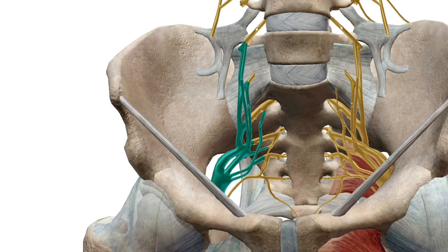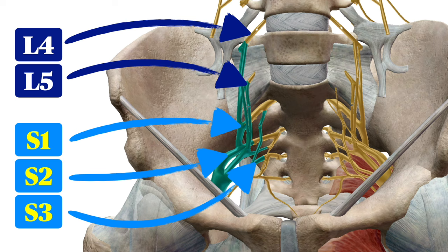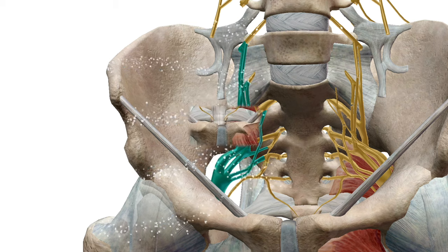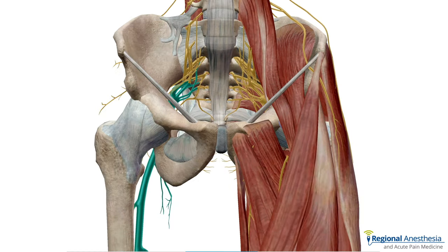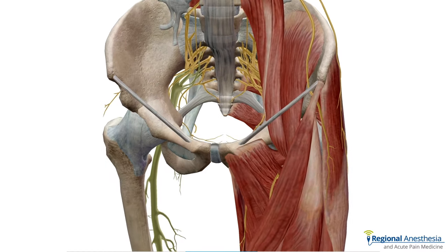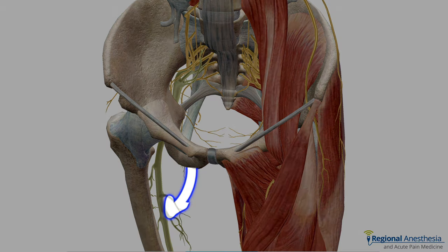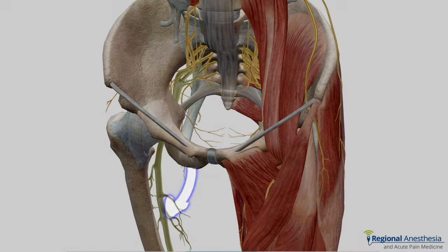The sciatic nerve is derived from the ventral rami of L4, L5, as well as S1, 2, and 3. These combine to form a single large nerve that then leaves the pelvis through the greater sciatic foramen. The nerve continues to course down the proximal thigh in the plane between the adductor group of muscles and the hamstrings.